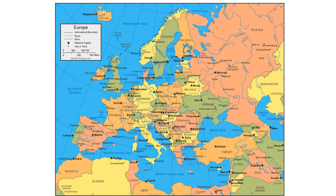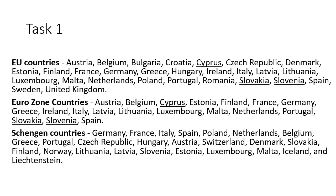To help you, I have given you a map that can help you put down the countries in Europe. The first task you've got to complete is to label each country — whether it's a European Union country, whether it's a Eurozone country, or whether it's a Schengen country.